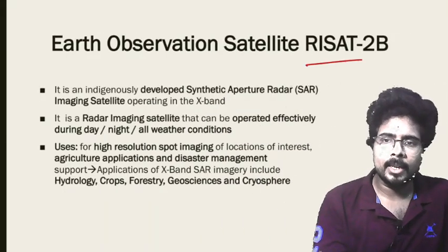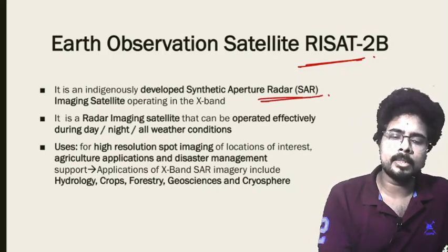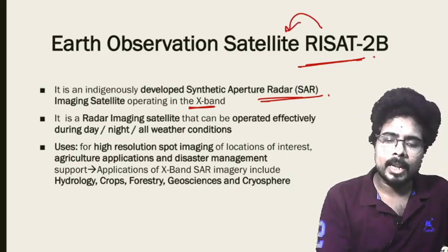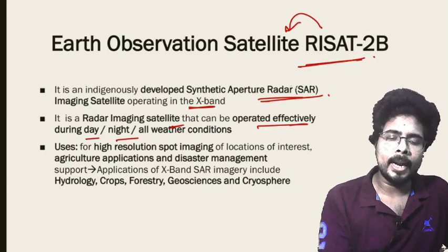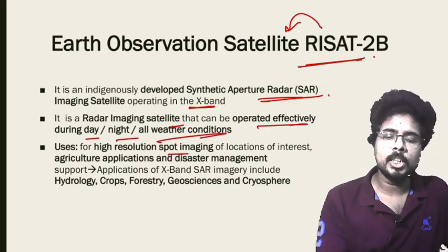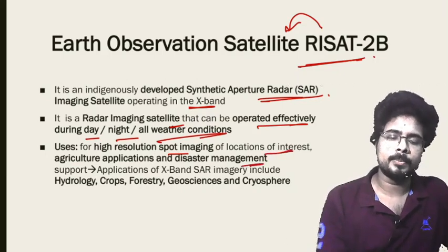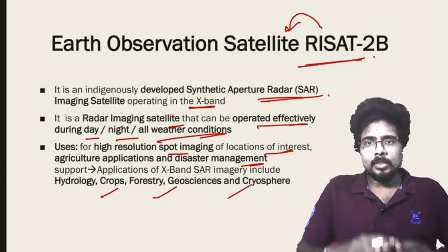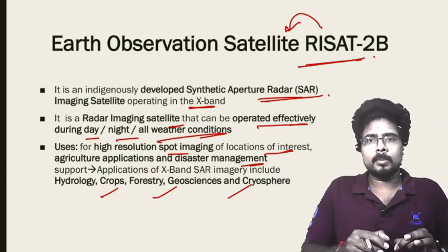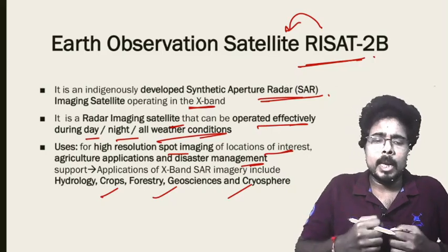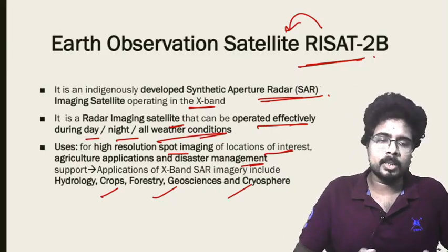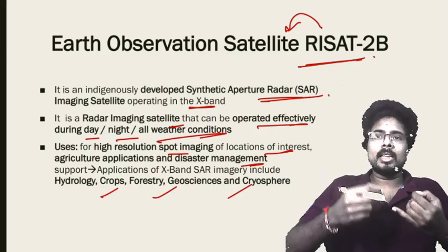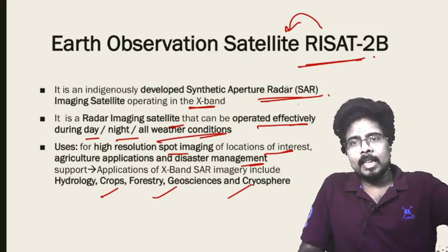Next: the Earth Observation Satellite RISAT-2B. It is an indigenously developed synthetic aperture radar (SAR) imaging satellite operating in the X-band. RISAT-2B is a radar imaging satellite that can be operated effectively during day, night, and all weather conditions. It is used for high-resolution spot imaging of locations of interest, agriculture applications, and disaster management. The imagery supports hydrology, crops, forestry, geosciences, and cryosphere studies. The main purpose of RISAT-2B is to observe the Earth and provide various information about physical and climatic features that cannot be observed manually.